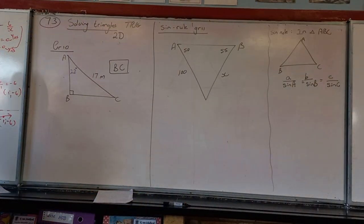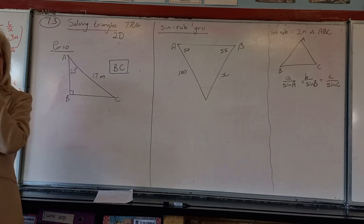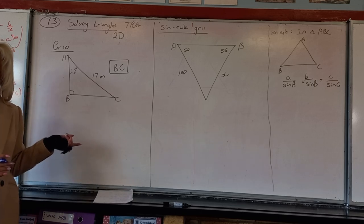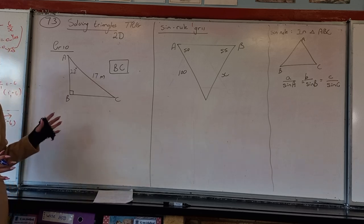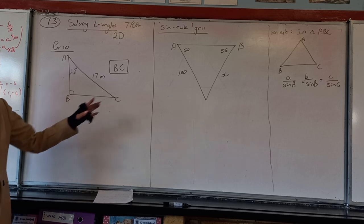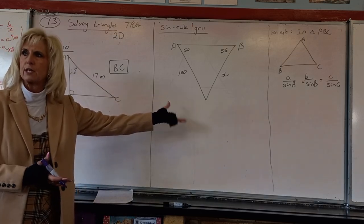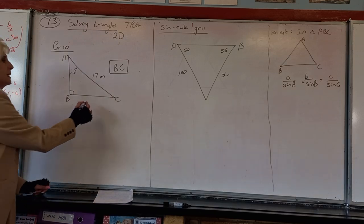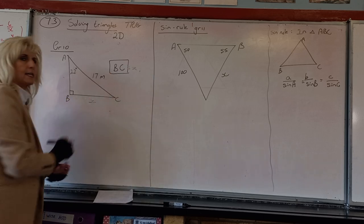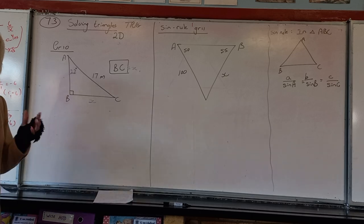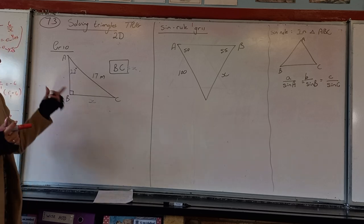We're going back into trigonometry — solving triangles, back to Grade 10. In Grade 10 you were always working with right-angle triangles. If it wasn't a right angle, you didn't have the tools. Now, in a right-angle triangle, if I asked you to find BC — let's call it x — how would you find x using a ratio?